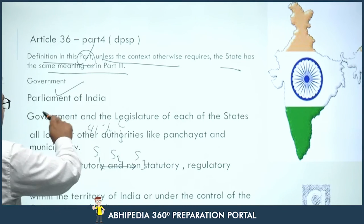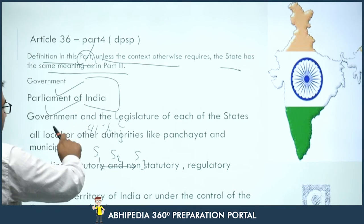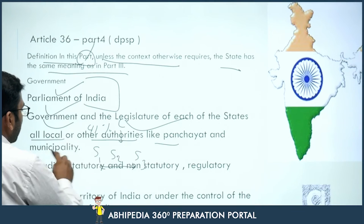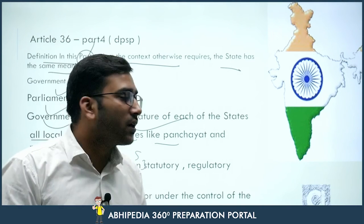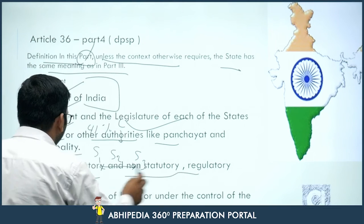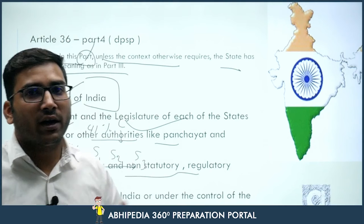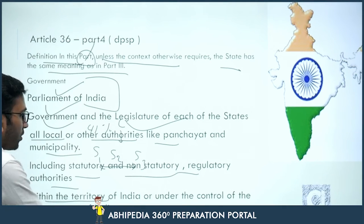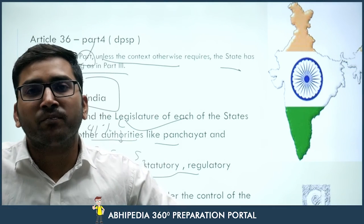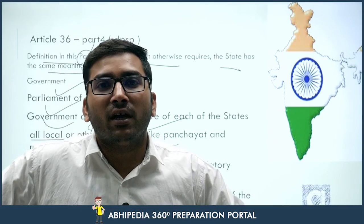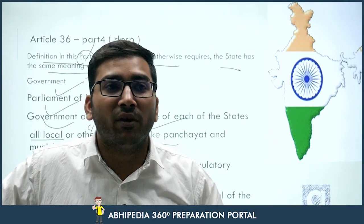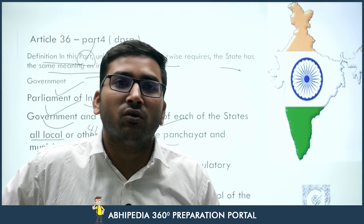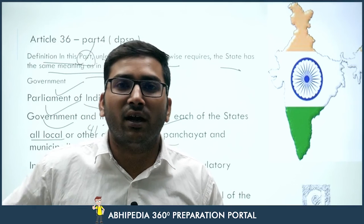So under Article 36 as well, the state includes: the government, then Parliament, the government and legislature of each state, local authorities like panchayats and municipalities, and statutory, non-statutory, and regulatory authorities — the same as in Article 12. Additionally, entities within the territory of India or under the control of the Government of India are included. Even any private company having a contract with the government for even a temporary period, or any private institution taking any sort of aid from the government, also falls under the category of state under Article 12 and Article 36.